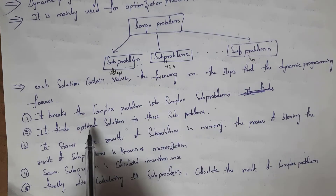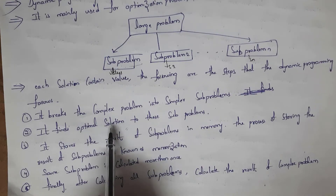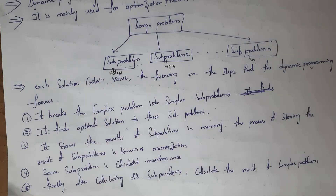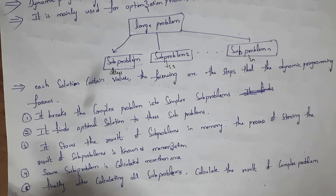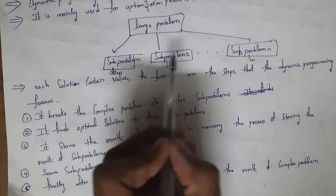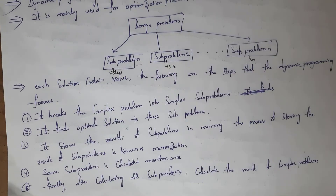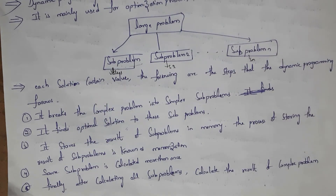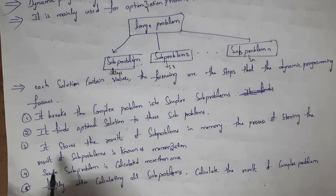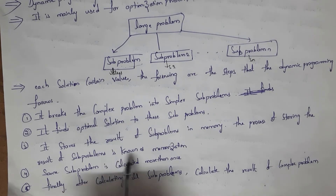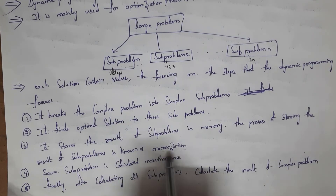It will find the optimal solution — the optimal solution is nothing but the best solution. After finding the optimal solution to these sub-problems, it will store these solutions in a particular memory location. The process of storing the result of sub-problems is known as memoization.